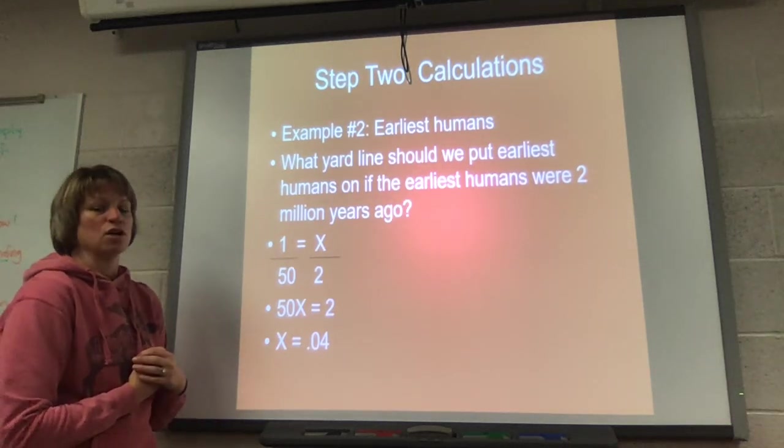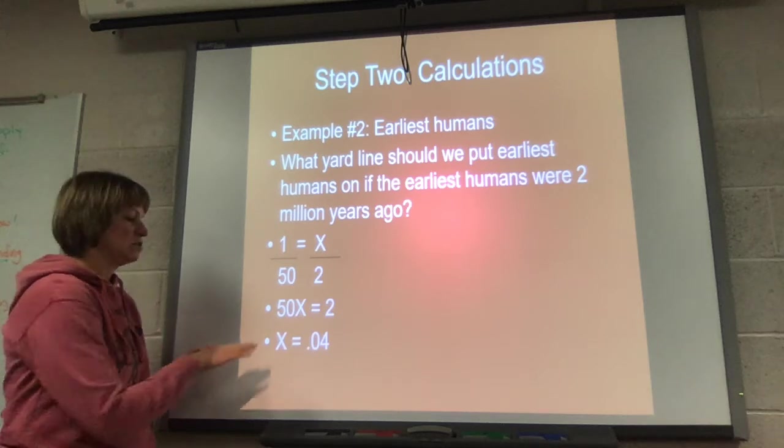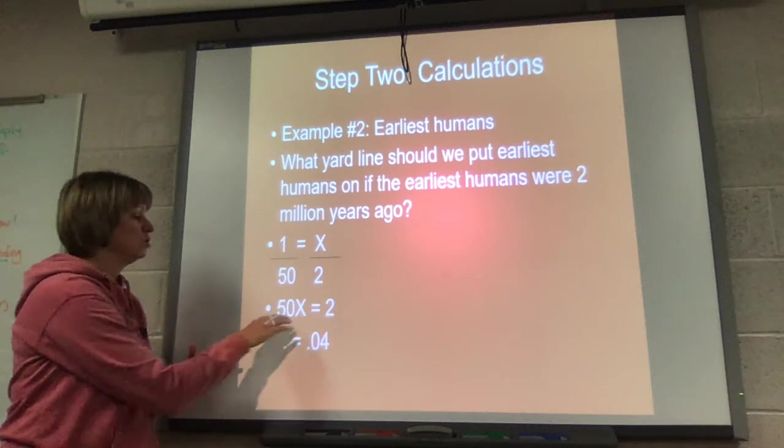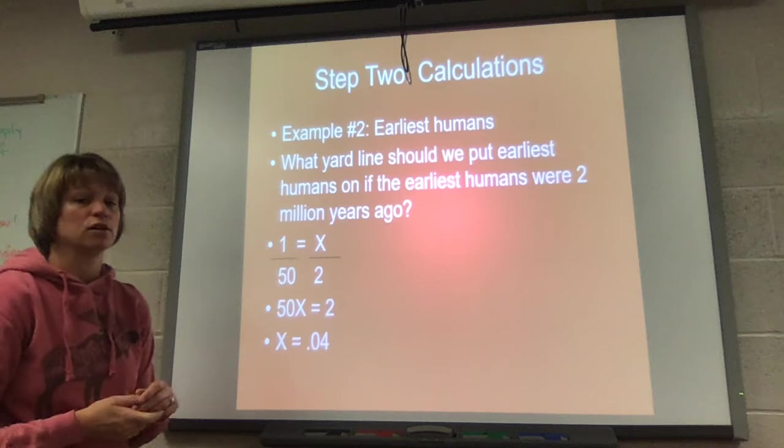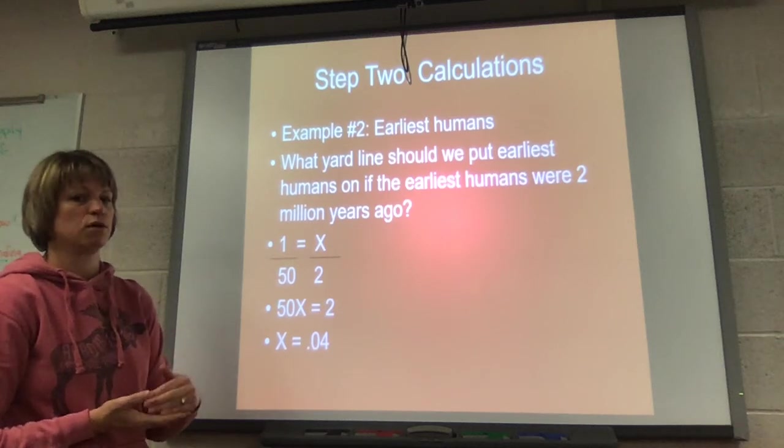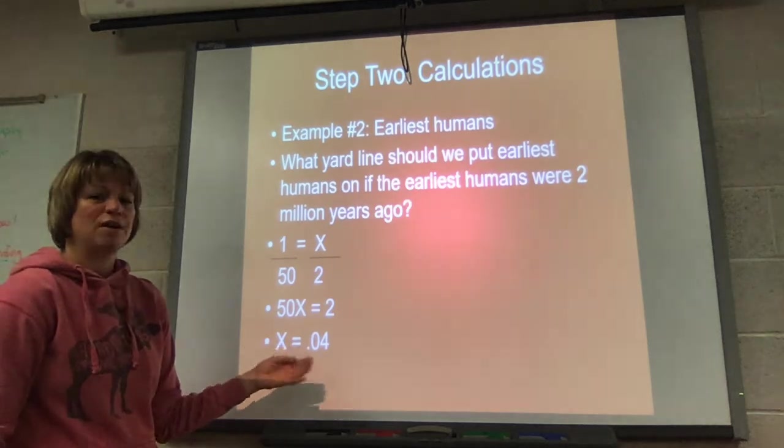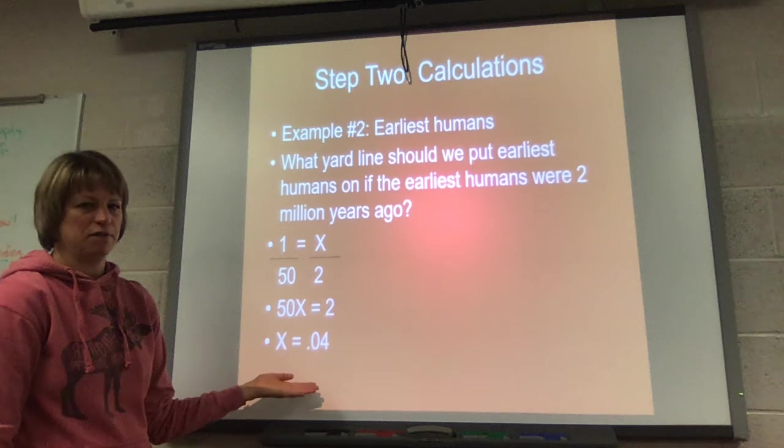And so you have to be careful here. You divide by 50 every single time. So the answer is not the 25 yard line. You don't do 50 divided by 2, you do 2 divided by 50. My students, this is weird but true: the earliest human fossils are on the 0.04 yard line. That might be pretty far off from your prediction.